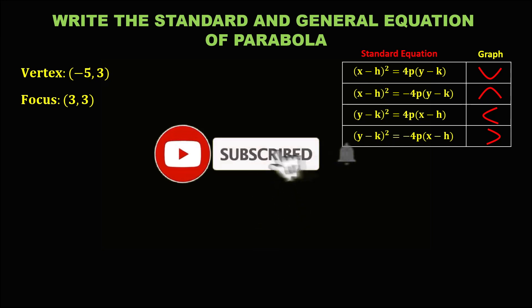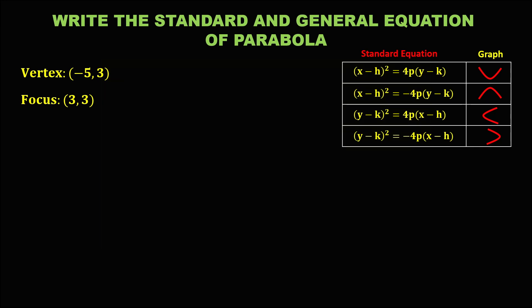For this problem, we need to write the standard equation and the general equation of the parabola with a given vertex and focus. First, we need to graph this parabola. The formula for the standard equation when it opens upward, opens downward, opens to the right, and opens to the left are each different.